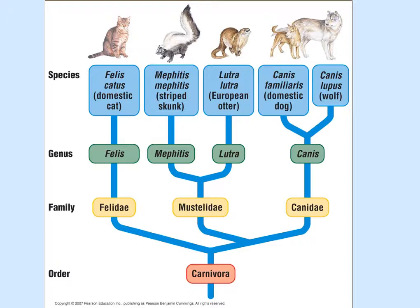The other branch is Mustelidae — mustelids, animals that have musk glands they use to mark their territory. That branches in one direction to skunks — striped skunks like we have around here are Mephitis mephitis. There are also spotted skunks and European skunks. Another genus is Lutra, which are otters — the European otter, but we've also got river otters and sea otters. Just one example of a very small part of a phylogenetic tree, but you get the idea of how it works.